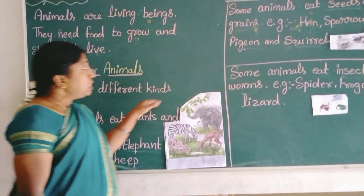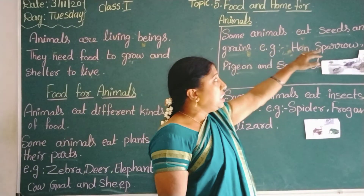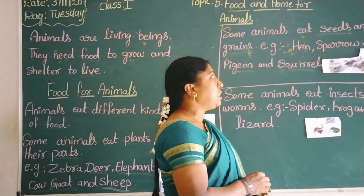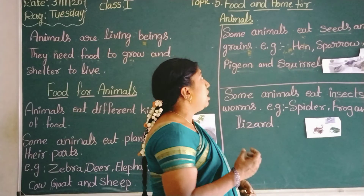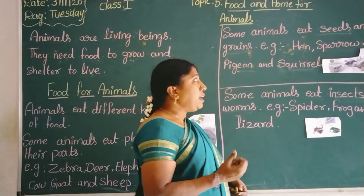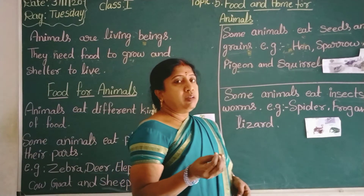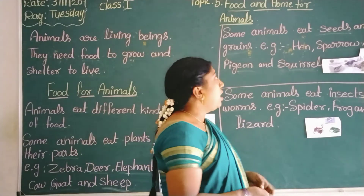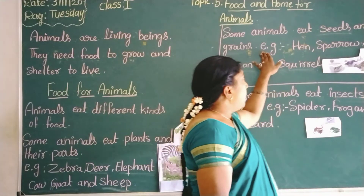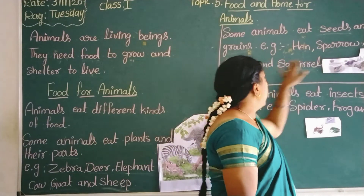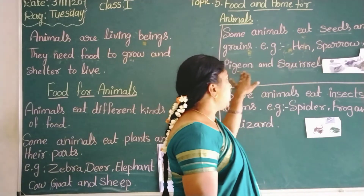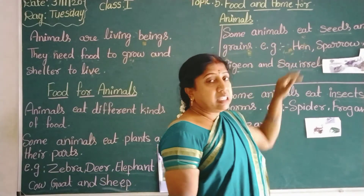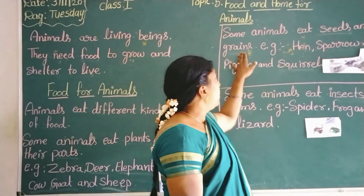Next, some animals eat seeds and rice. Example: hen, sparrow, pigeon and squirrel.